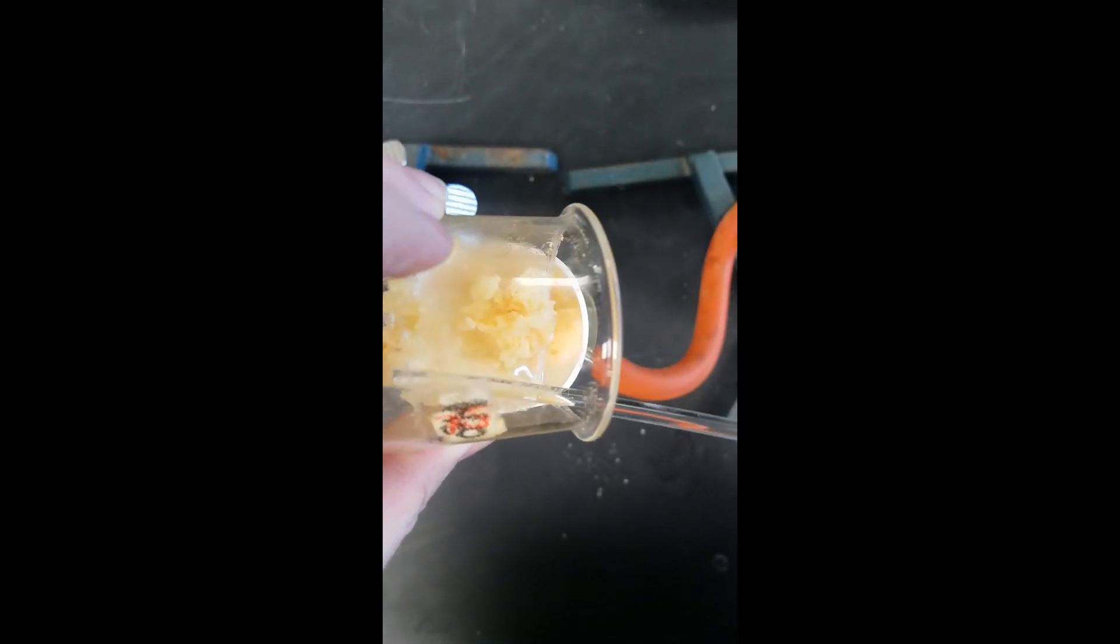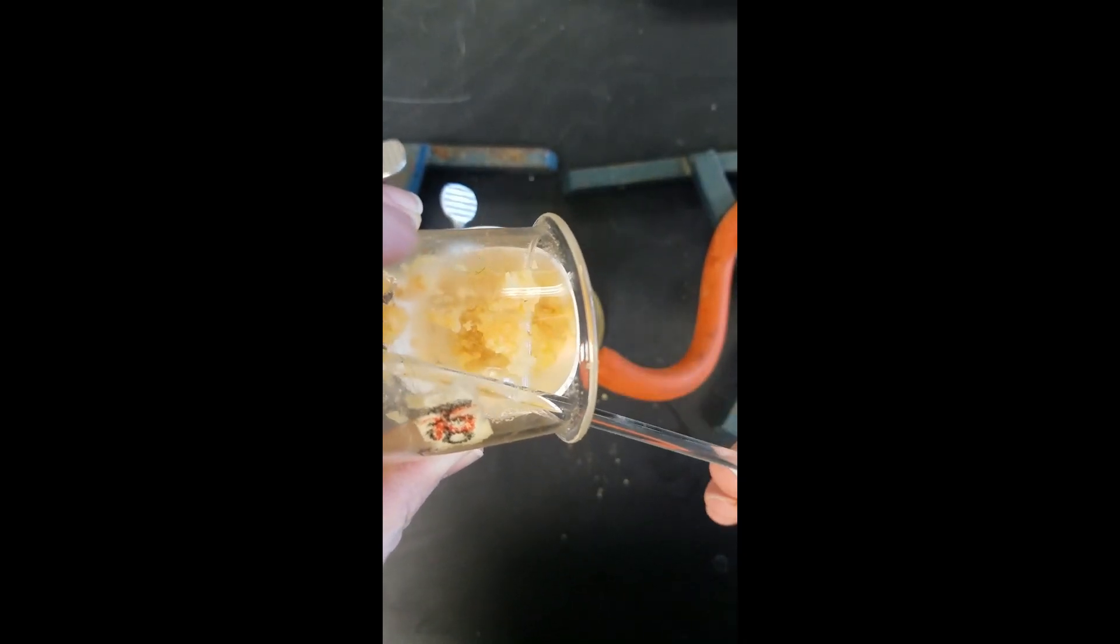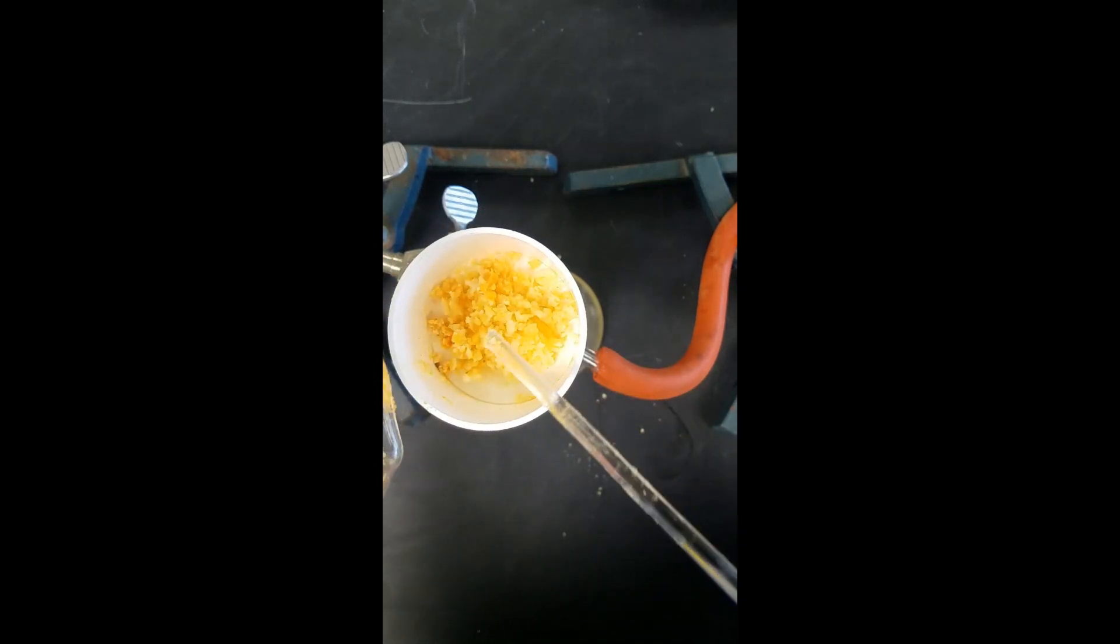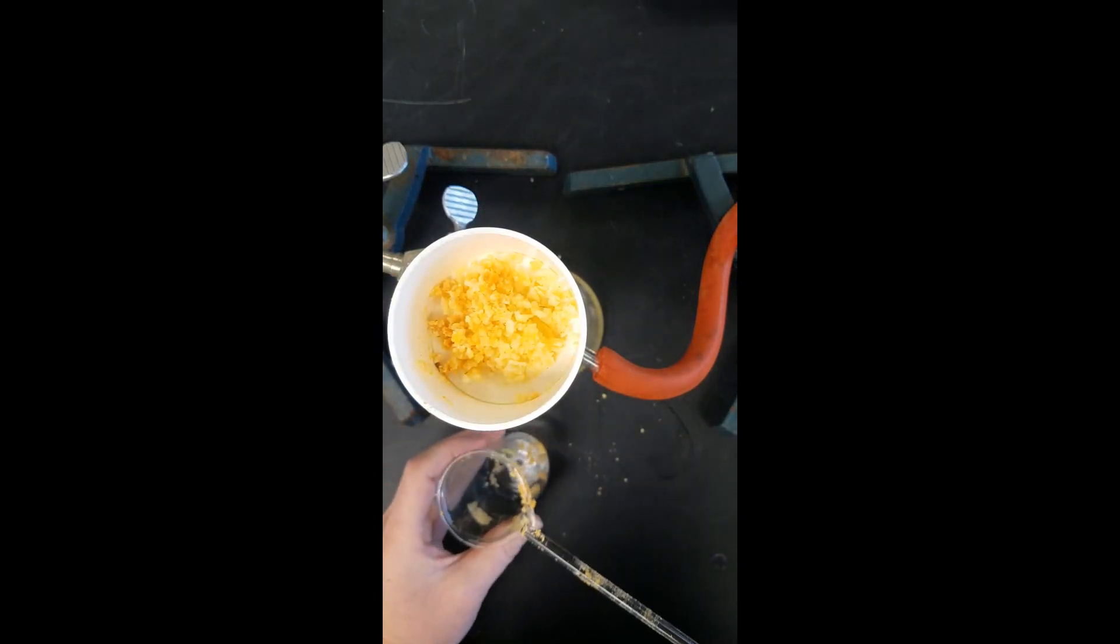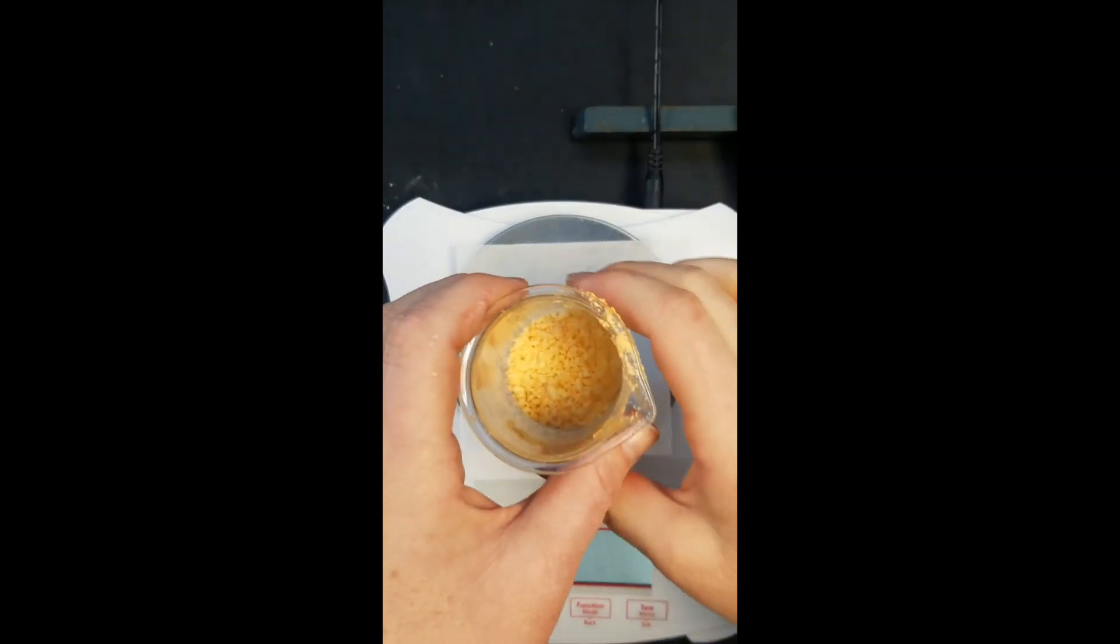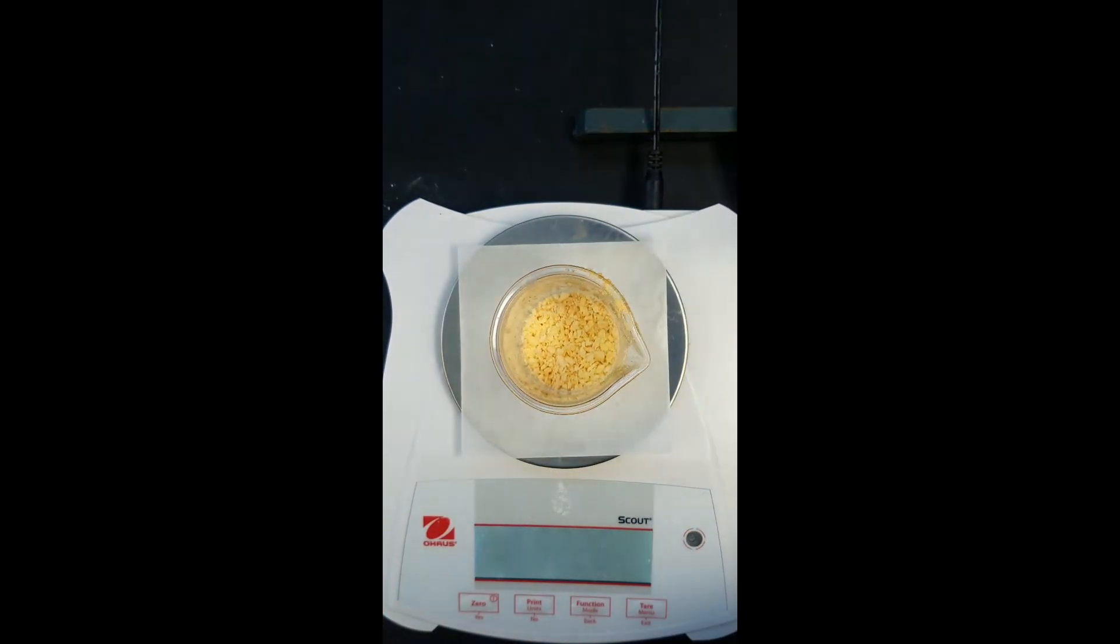Once this has been filtered, we're going to make sure that we allow the vacuum to run for a minute to make sure all the petroleum ether has been removed, and we're going to place it back into the beaker so that we can get a final weight of our potato chips. We're going to get the final mass of our Ruffles potato chips. So this is after we have extracted all of the fat.